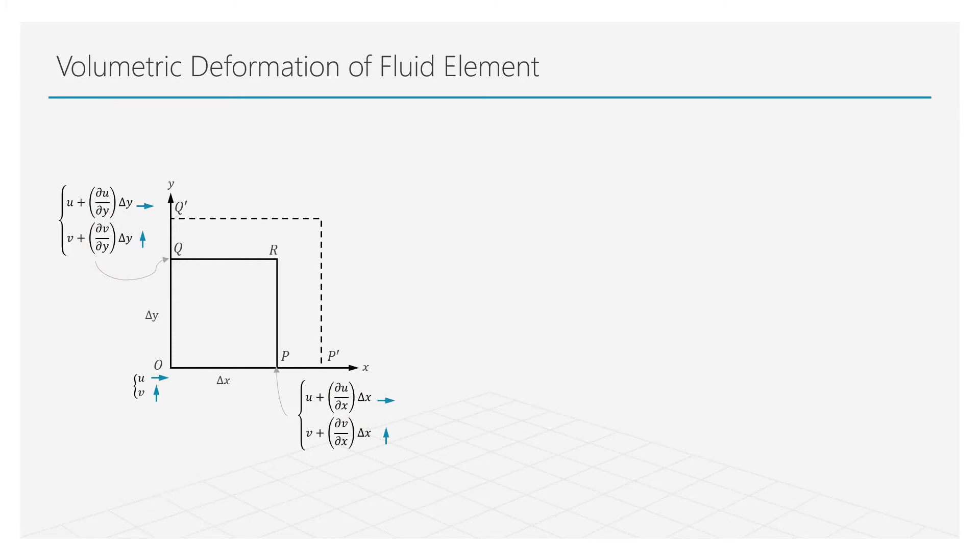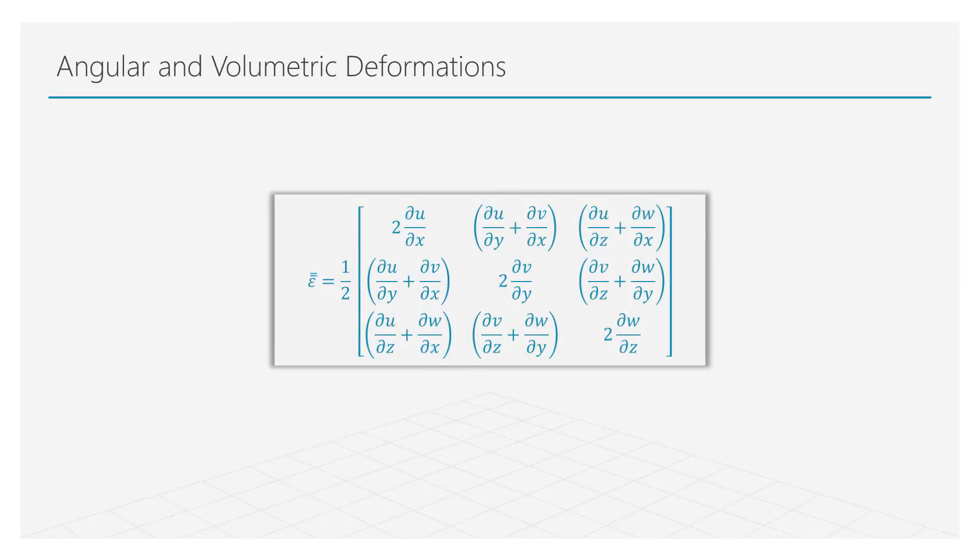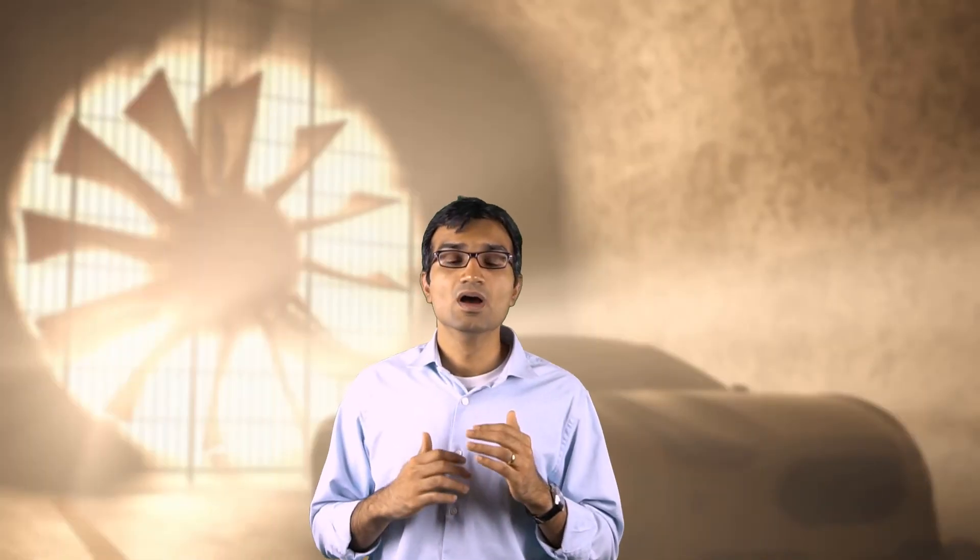The total rate of volumetric strain is given by the following equation. The angular and volumetric strains together form the overall strain tensor. The off-diagonal terms of this tensor describe the angular deformation whereas the main diagonal terms represent volumetric deformation. Until now, we have learnt about the velocity vector and different types of motion undergone by a fluid element.